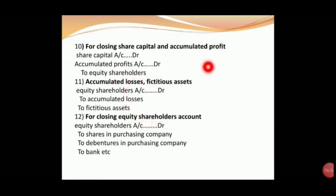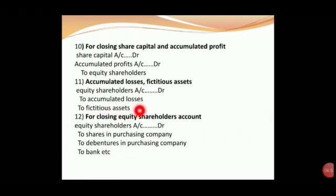For closing Share Capital and Accumulated Profit — Share Capital and Reserves balance is transferred. Share Capital and Reserves debit, to Equity Shareholders Account. If there are fictitious assets such as preliminary expenses, accumulated losses, debenture redemption reserve, discount on issue of debentures, profit and loss account debit balance — these are fictitious assets. Equity Shareholders Account debit, to accumulated losses and fictitious assets, including premium on redemption, debenture redemption reserve, profit and loss account debit balance, and preliminary expenses.